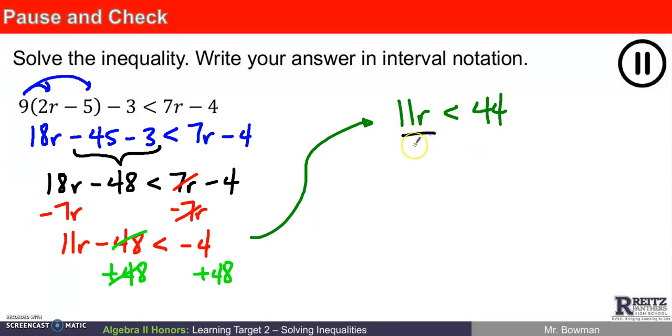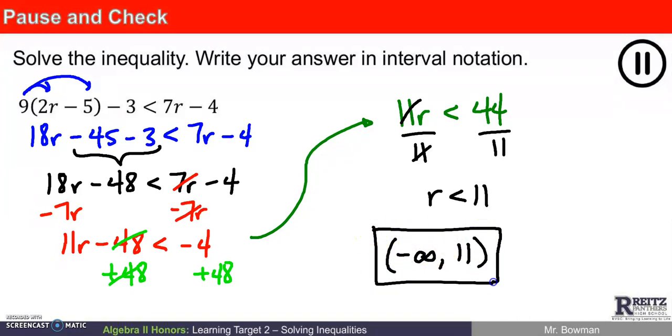And I've got 11r is less than negative 4 plus 48 is positive 44. And I know what to do now. I can divide both sides of the inequality by positive 11. Since I divided by a positive number, I don't need to change the inequality sign. But I know that r has to be less than 11. And to write that in interval notation, if r is less than 11, then I need all the things from negative infinity up to, but not including, positive 11. And there we have it.